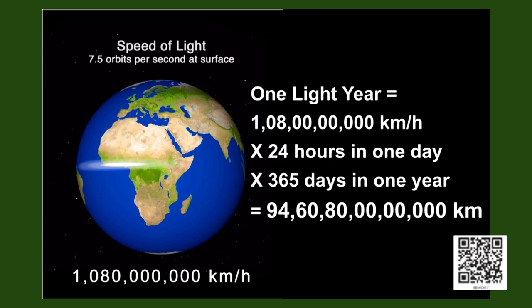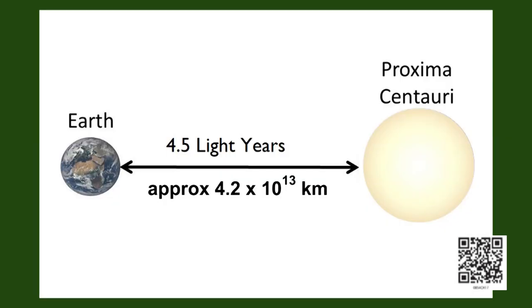So one light year equals 108 crore into 24 hours into 365 days, which is this huge number that is shown on the screen. Look how huge this number is. We saw that the second nearest star to earth, which is the Proxima Centauri, is roughly 4.5 light years away from earth. That would be a distance that is shown on the screen here, which is actually a very large number.